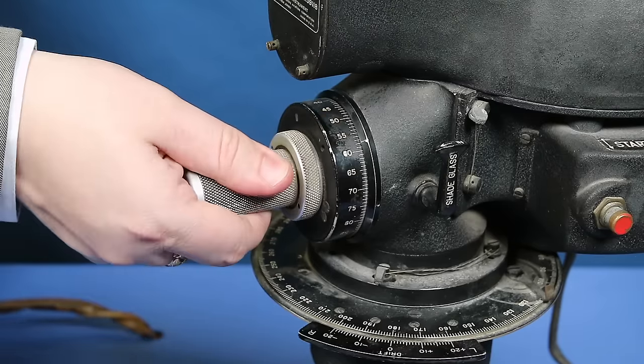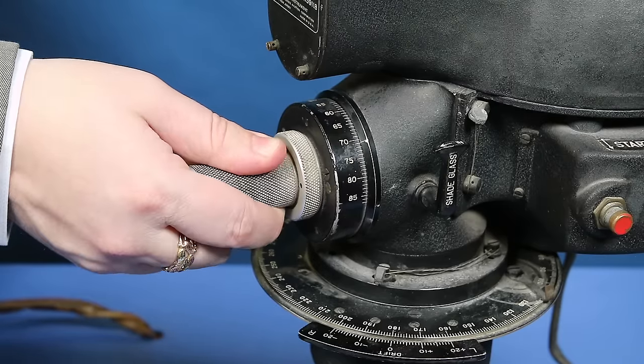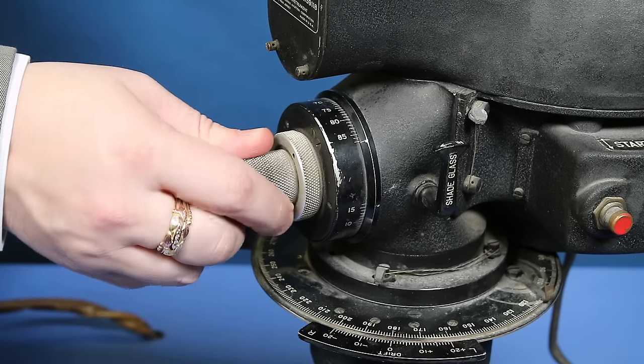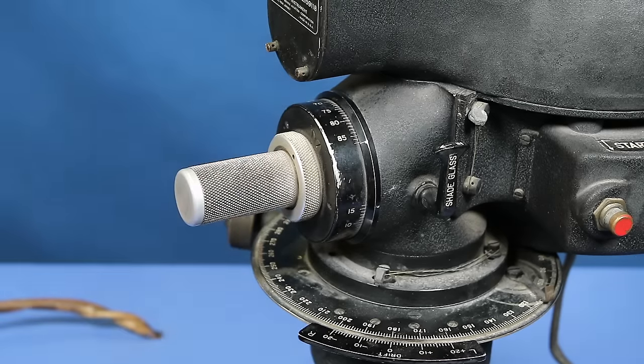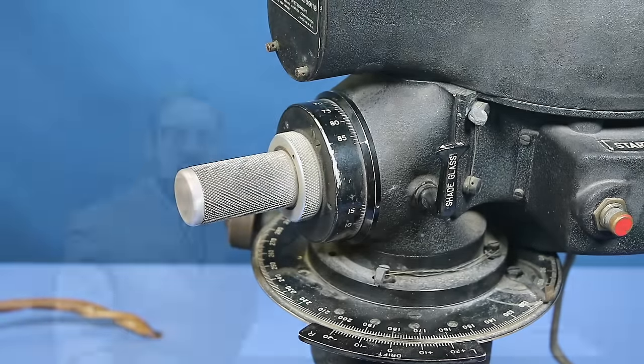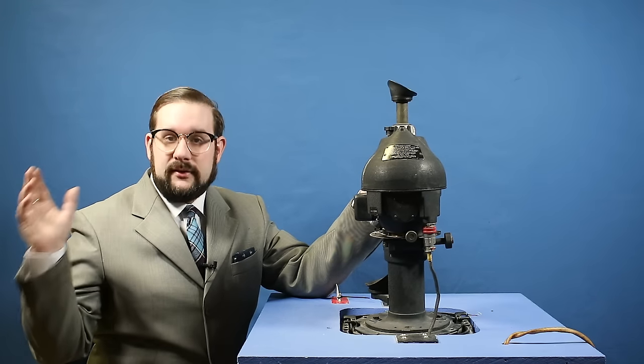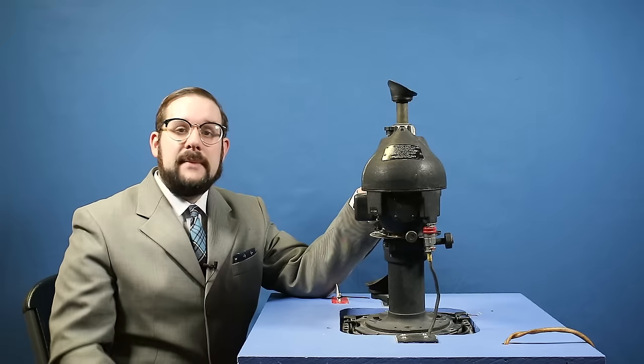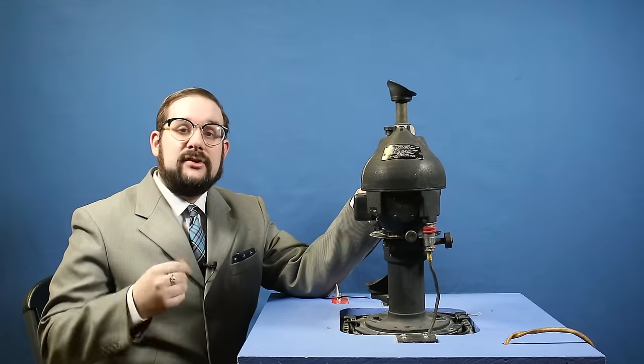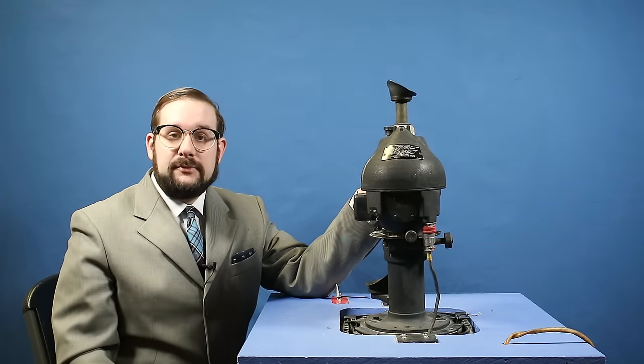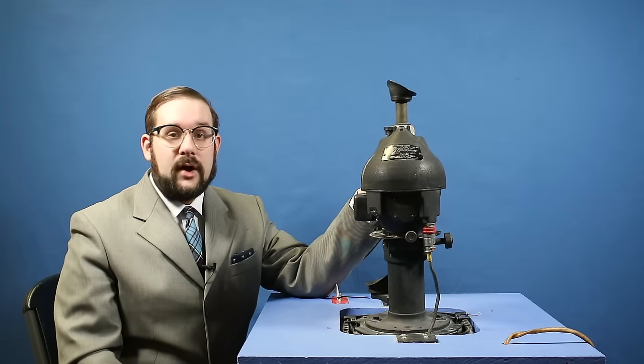This is when you start your stopwatch. As you continue to turn you're going to hear a second click which indicates that you have reached 70.9 degrees. This is when you stop your stopwatch. You then simply divide your altitude in feet by your elapsed time in seconds that you've just measured. This will directly give you your ground speed without needing to apply any sort of correction factor.